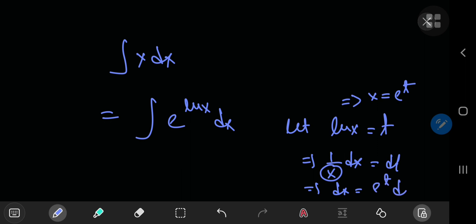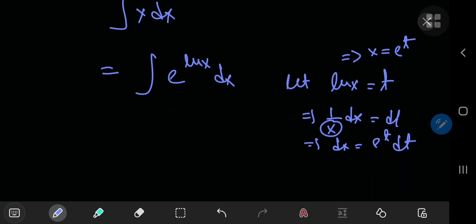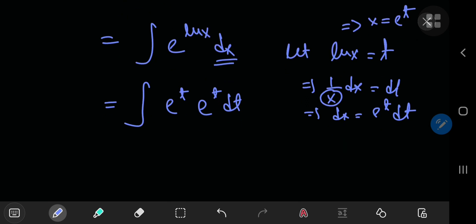So dx equals e to the t times dt. So what you have here is now the integral in the t world: e to the t, and the differential element is e to the t times dt. So that means you have to integrate e to the 2 times t with respect to t.